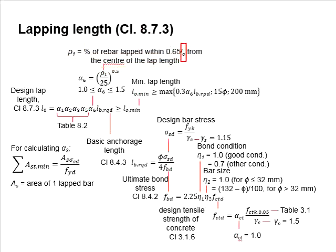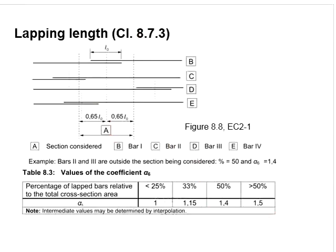Lo here represents the length as represented here. Taking the centroid of the lapping length offset by 0.65 Lo to both sides of the center of Lo, this will be the regions to be used to consider for the alpha 6.